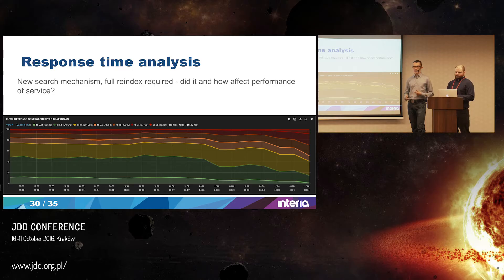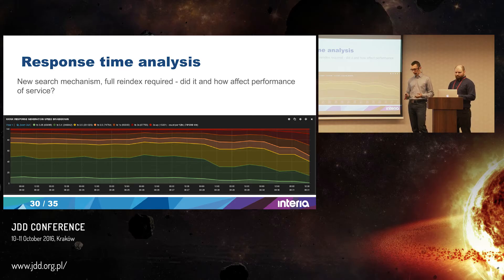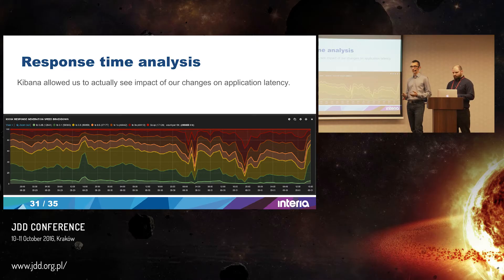Another time we were changing the indexing mechanism in an application and didn't know how much it would impact performance. This graph shows that when we started re-indexing data, the application was responding slower. We could see exactly how much slower and could decide whether we could stand this, whether to continue re-indexing or stop it and run it later. This is data that would be hard to see with standard tools, but Kibana lets you visualize it and see trends on a graph.